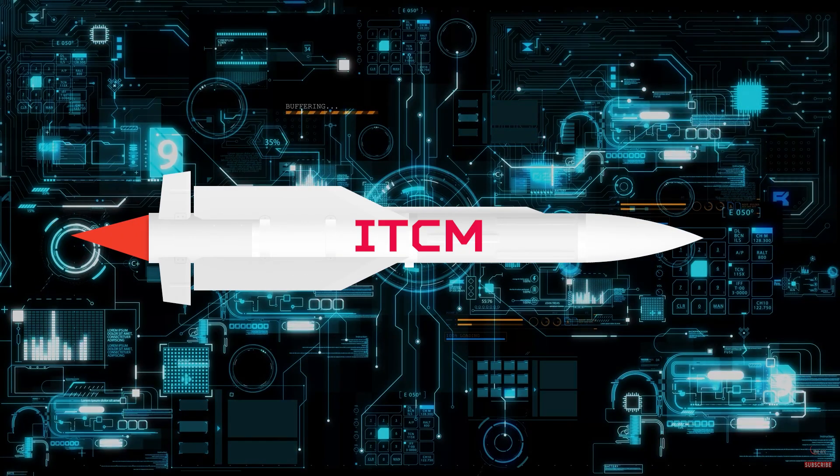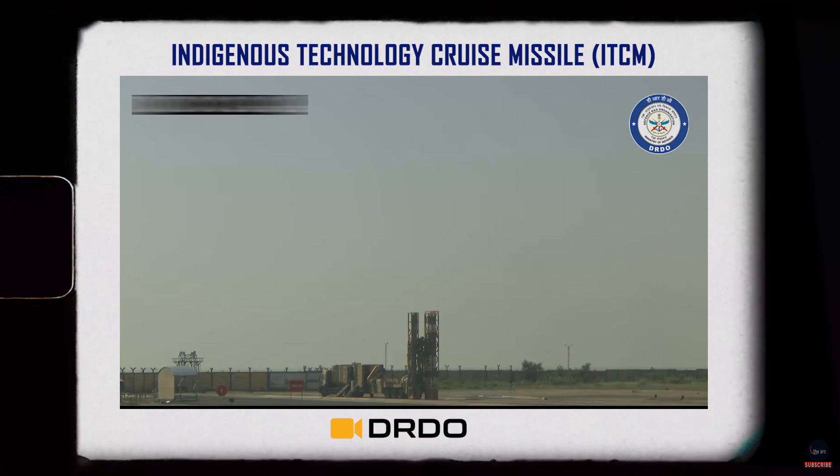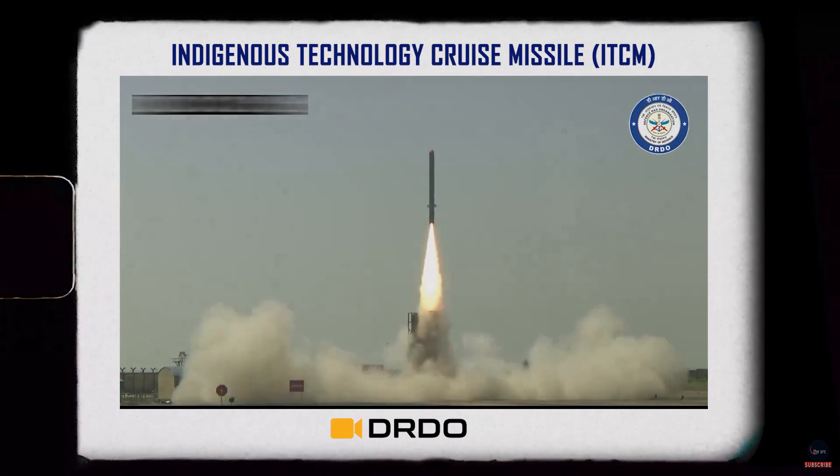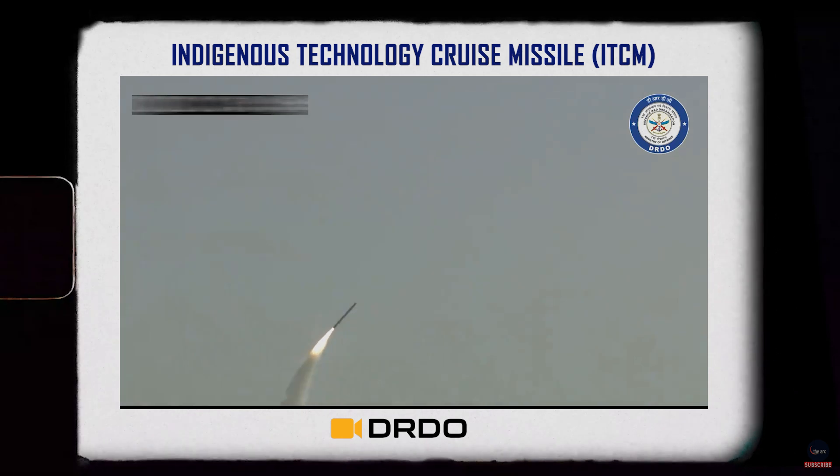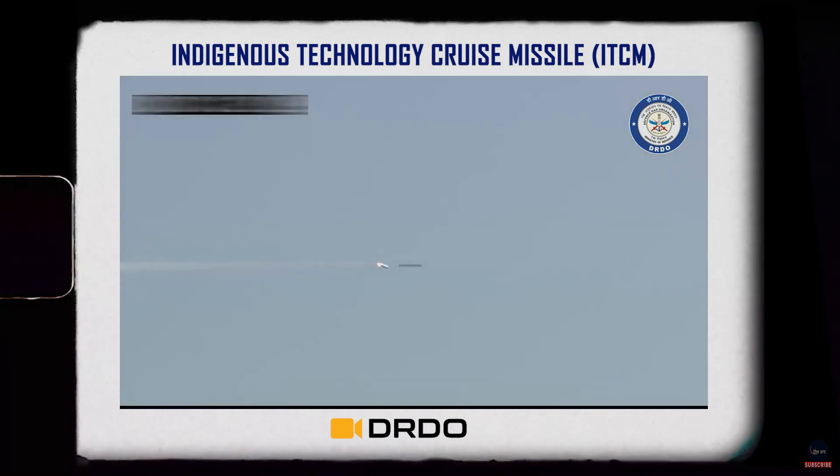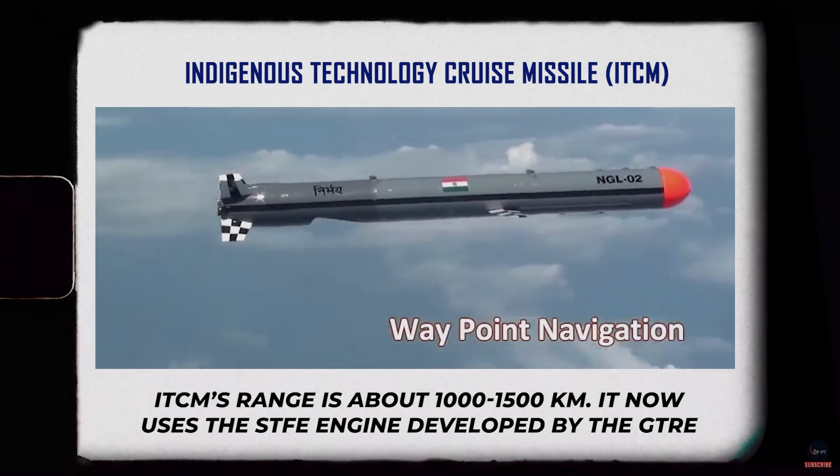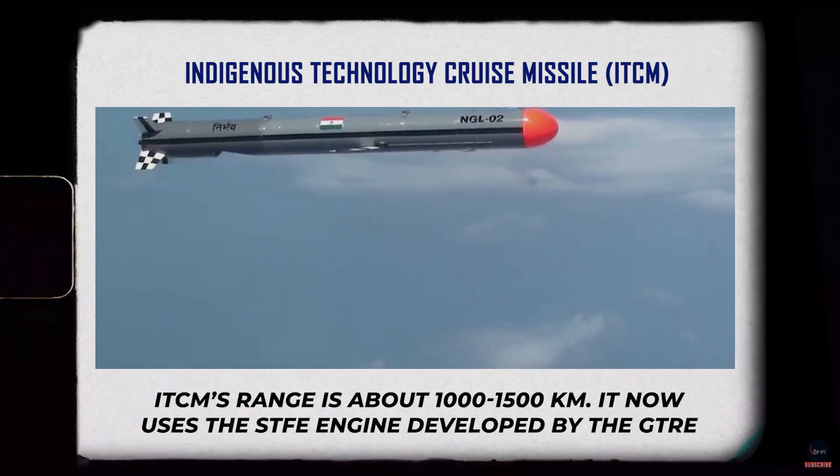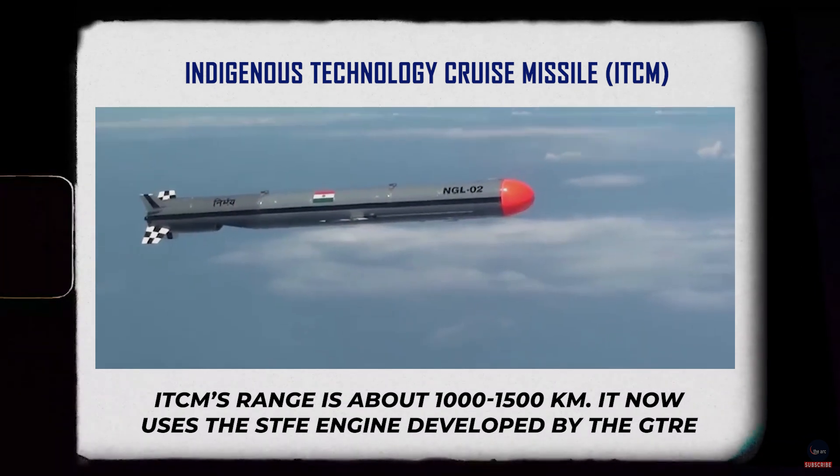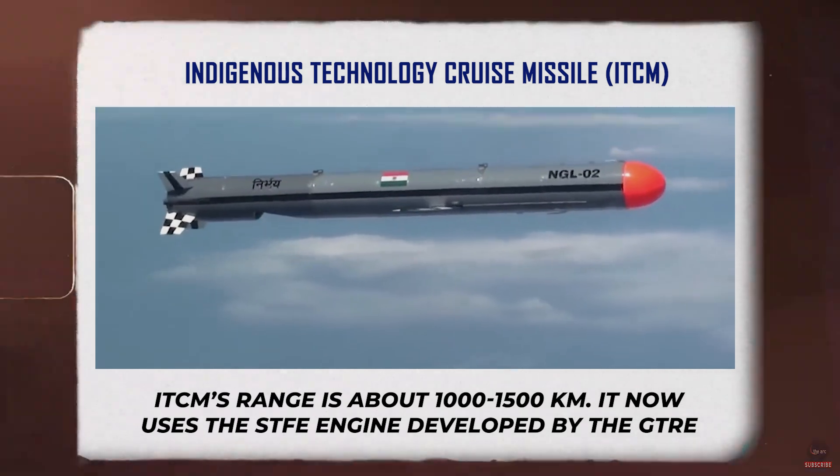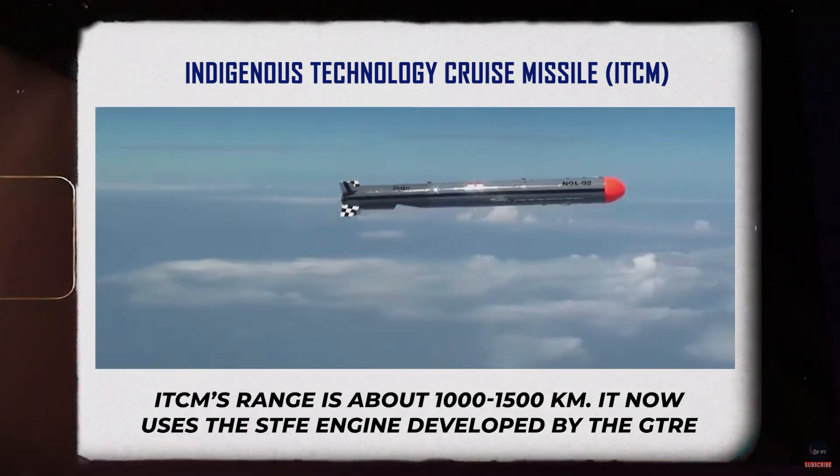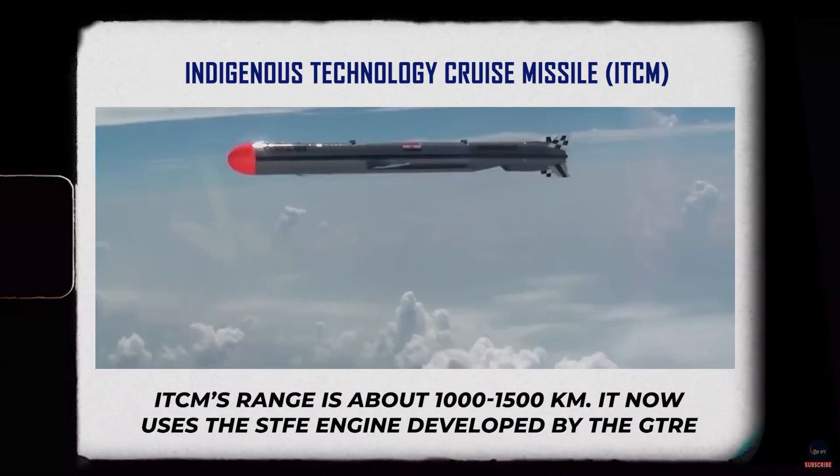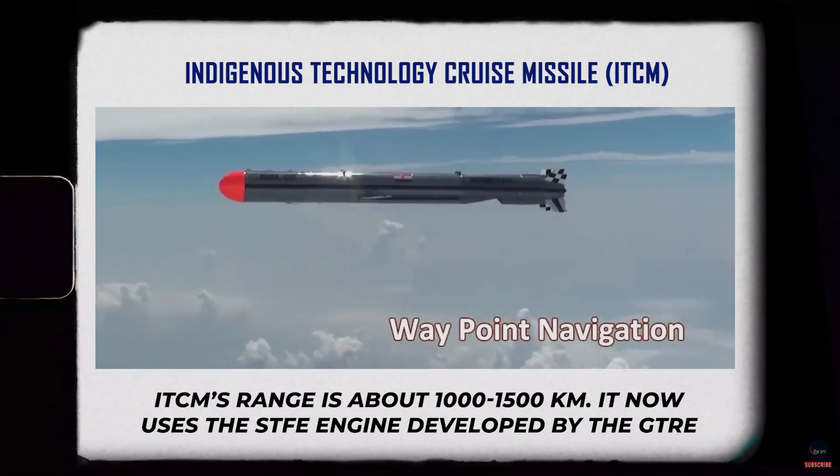Now that we have understood the difference, let's discuss the ITCM. On April 18, 2024, DRDO conducted a successful flight test of an indigenous technology cruise missile from ITR Chandipur off the Odisha coast. The ITCM, which was earlier named Nirbhai, is a 1,000 to 1,500 km range cruise missile. The missile has sea-skimming and loitering capability. The missile in its early stage of development had a Russian engine, but now it has the small turbofan engine or STFE, developed by the Gas Turbine Research Establishment or GTRE. The engine was earlier named as Manik.